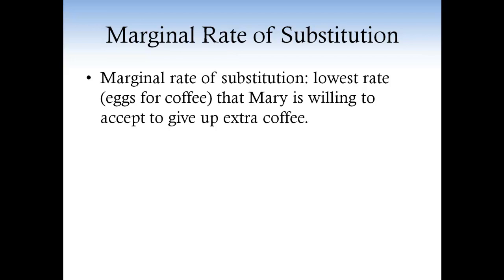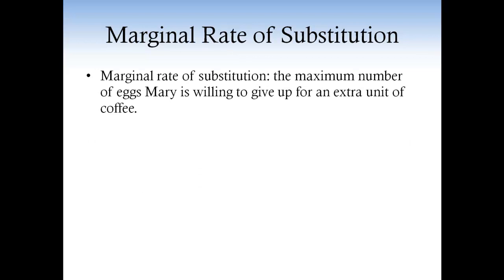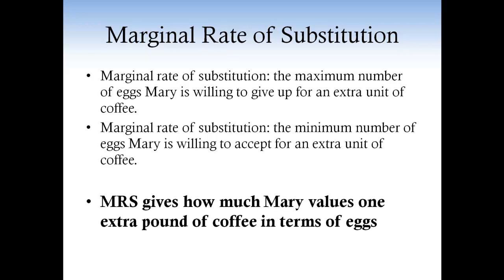The marginal rate of substitution can also be interpreted as the minimum rate, eggs per coffee, that Mary is willing to accept to give up coffee. In other words, the marginal rate of substitution is the minimum number of eggs that Mary is willing to accept to give up a marginal unit of coffee. So to summarize: the MRS is the maximum number of eggs Mary is willing to give up for an extra pound of coffee, and also the minimum number of eggs she is willing to accept to give up one unit of coffee. This is why we say the MRS tells us how much Mary values a marginal unit of coffee in terms of eggs.